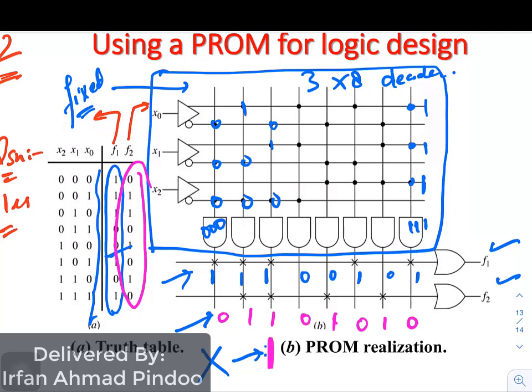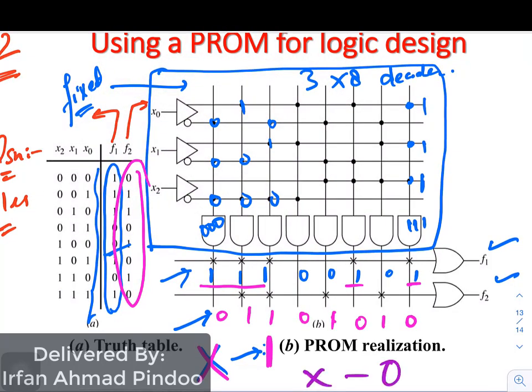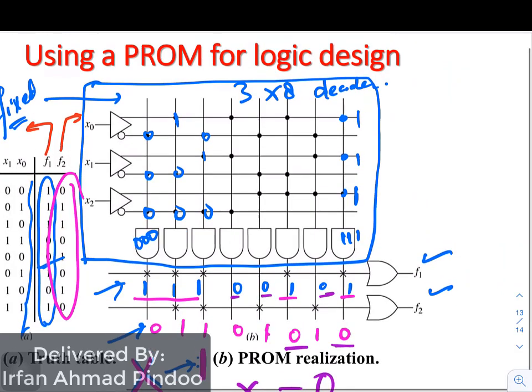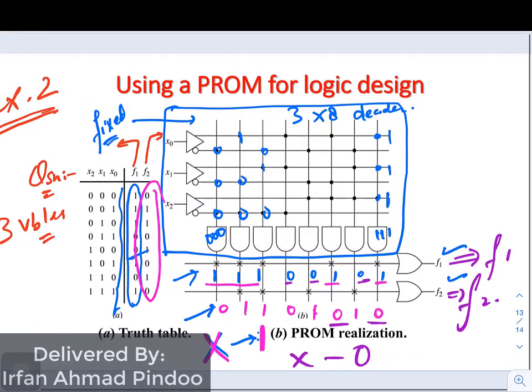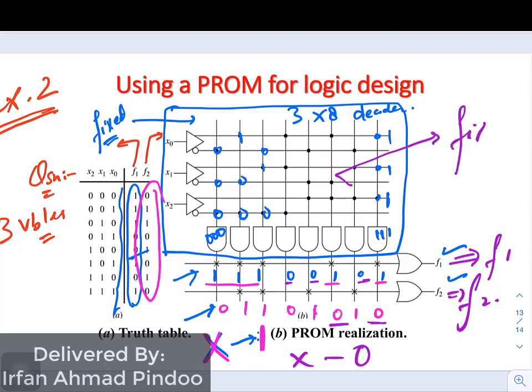Now accordingly you see wherever there is 1 you have to put a cross. So you can see wherever there is 1 there is a cross and wherever you are having 0, wherever there is no connection, that is 0, that time there will be no cross. So wherever there is 0 you can see there is no cross. So this is the function f1 being implemented here and this represents function f2. So again we see in this particular diagram the AND array is fixed, you cannot program it, however the array of OR gates can be programmed.